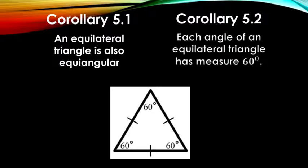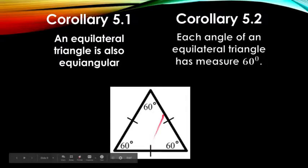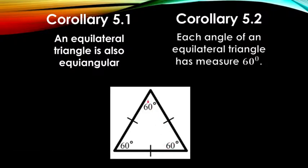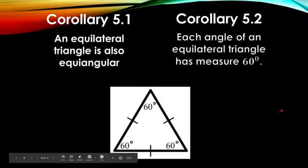In corollary 5.2, each angle of an equilateral triangle has 60 degrees. It's standard. In an equilateral triangle, the standard is 60 degrees for each angle. So 60 plus 60 is 120, plus 60 is 180 degrees. That's standard.